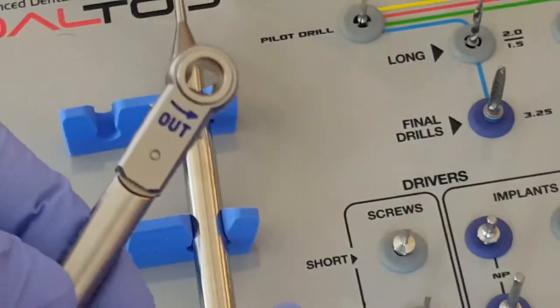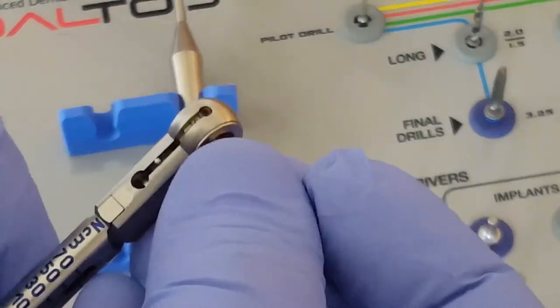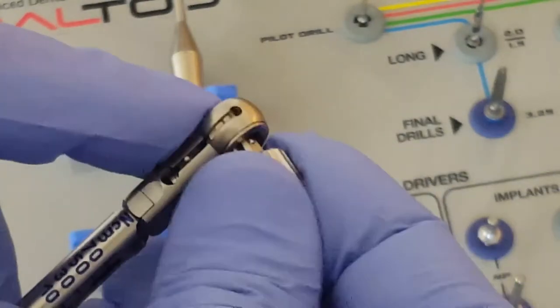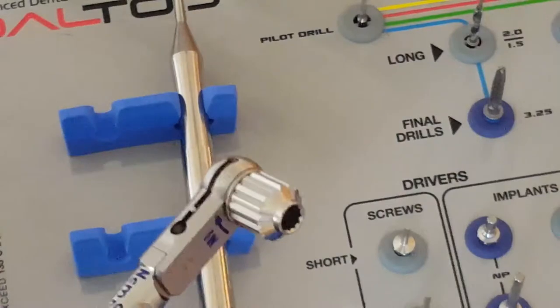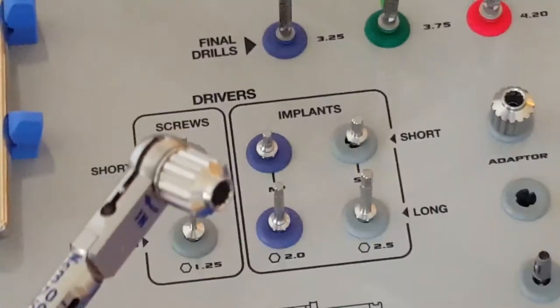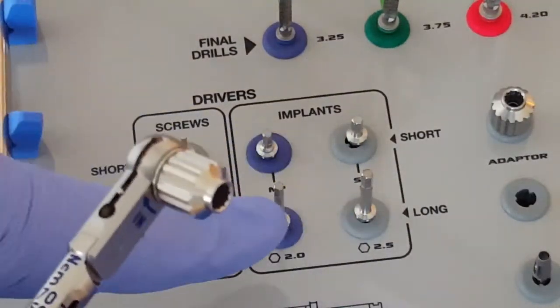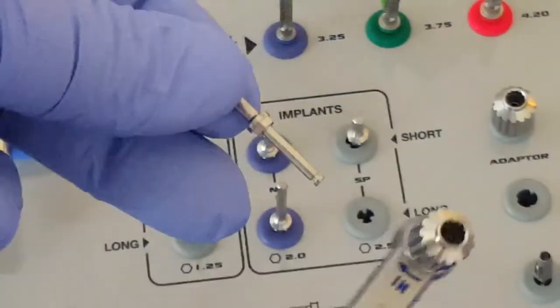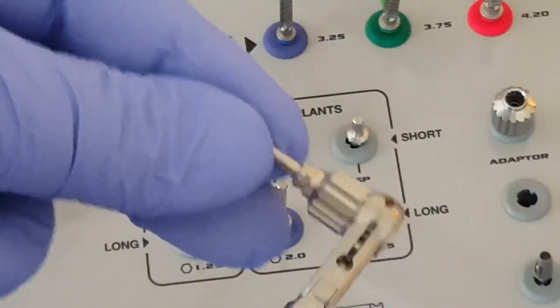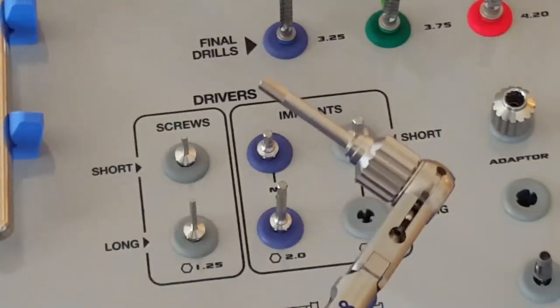one side says out. We insert the adapter into the side that says in. And then we pick and select the appropriate implant insertion key. So if it's a standard platform, we would take the long or the short, and insert that to complete the assembly.